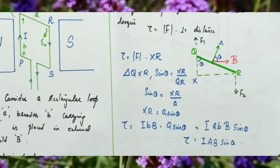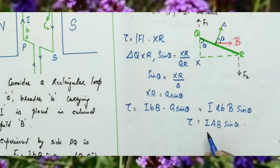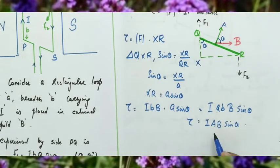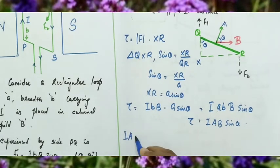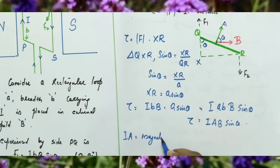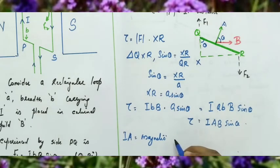We now introduce a new term: I times A, current times area, is called the magnetic dipole moment. Just as we studied electric dipole moment in the first chapter, for a current loop, current times area is called magnetic dipole moment, M = IA.